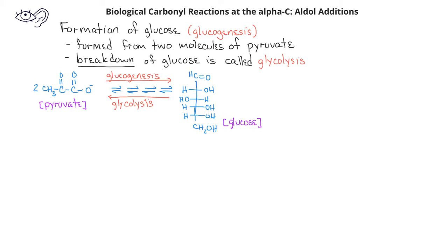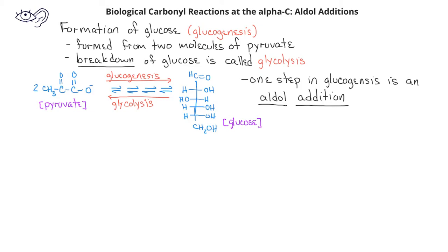Because glucose has twice as many carbons as pyruvate, it's not surprising to learn that one of the steps in the biosynthesis of glucose is an aldol addition. An enzyme called aldolase catalyzes an aldol addition between dihydroxyacetone phosphate and glyceraldehyde 3-phosphate.